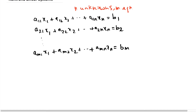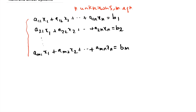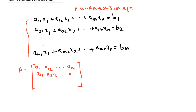We can write down the coefficient matrix A for this linear system. A is an m×n matrix whose first row is [a₁₁, a₁₂, ..., a₁ₙ], second row is [a₂₁, a₂₂, ..., a₂ₙ], and mth row is [aₘ₁, aₘ₂, ..., aₘₙ]. The elements of each row of A are the coefficients of all the unknowns x₁, x₂, ..., xₙ in the corresponding equation.